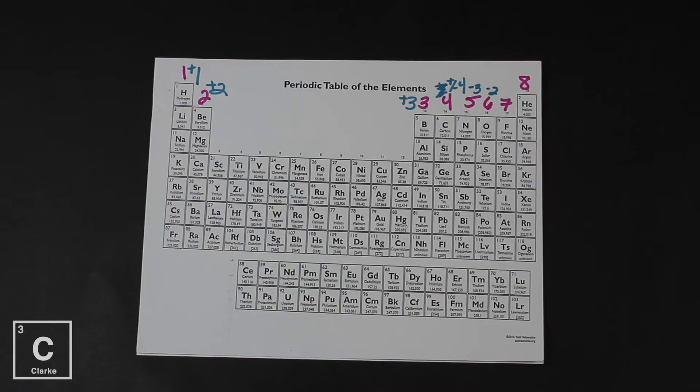Group 16 has six valence electrons — we only need two more. It's going to gain two. Let's label that with a negative two charge. So group 16: six valence electrons, negative two as its oxidation number, gaining two electrons.